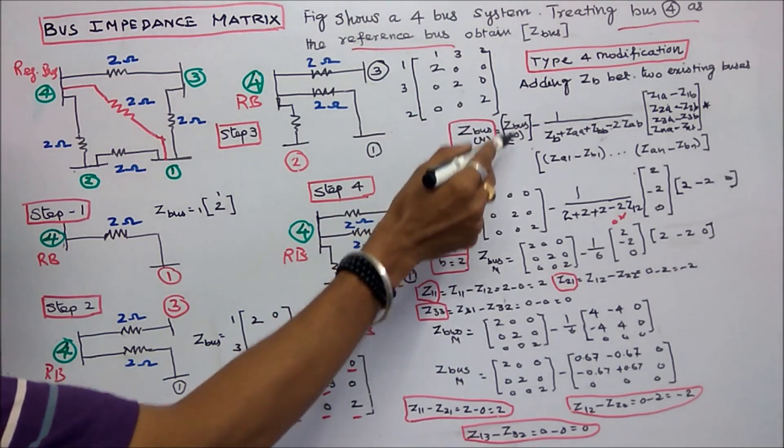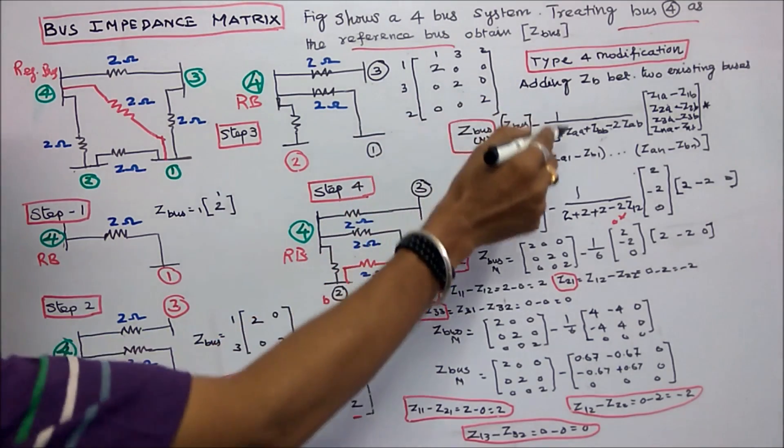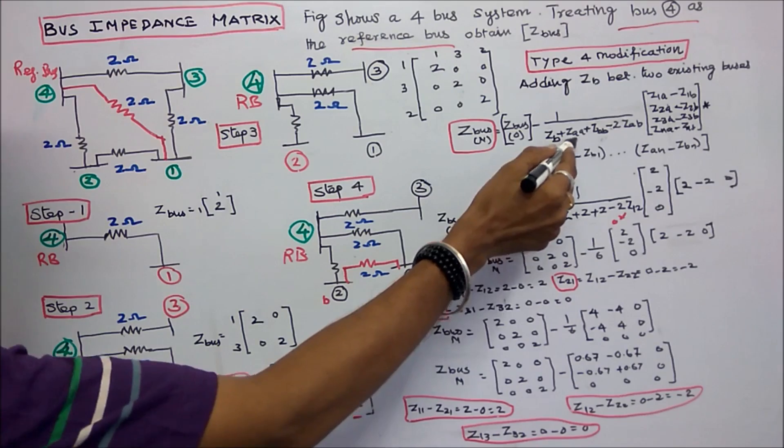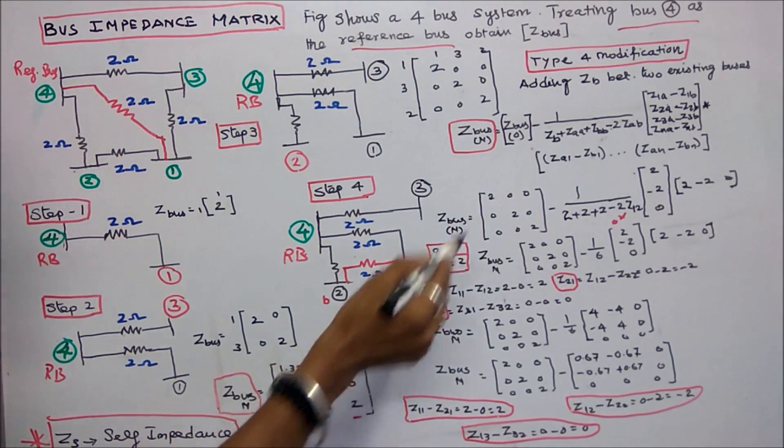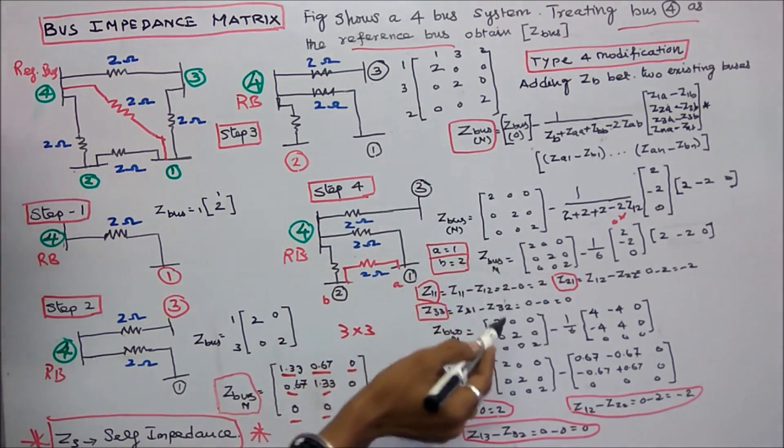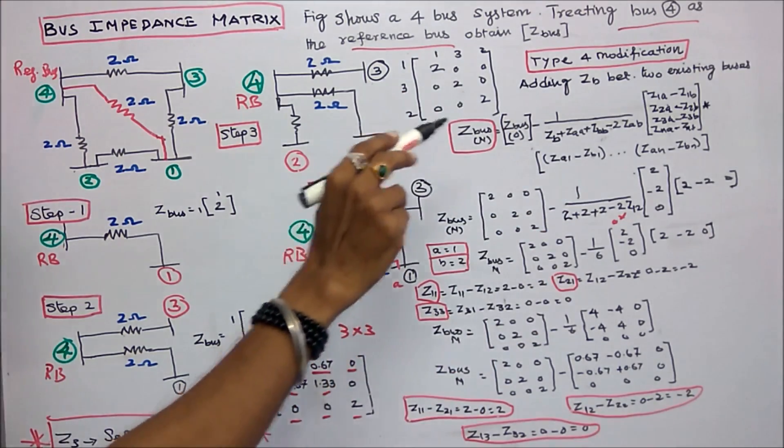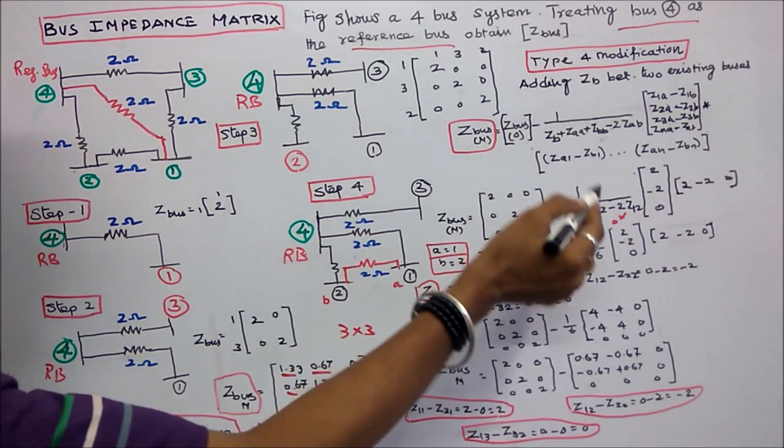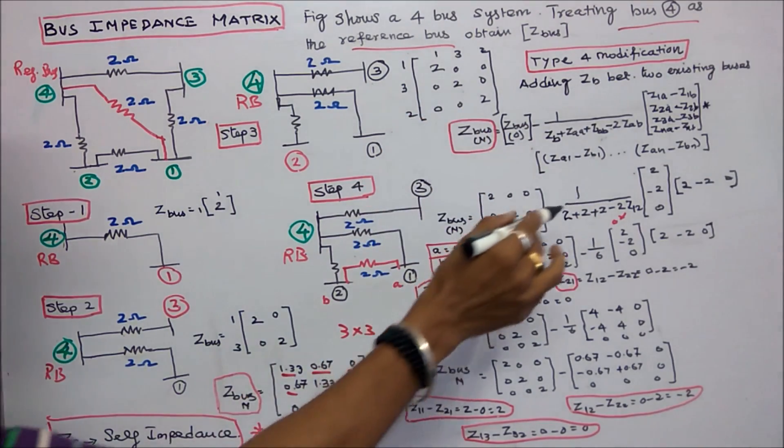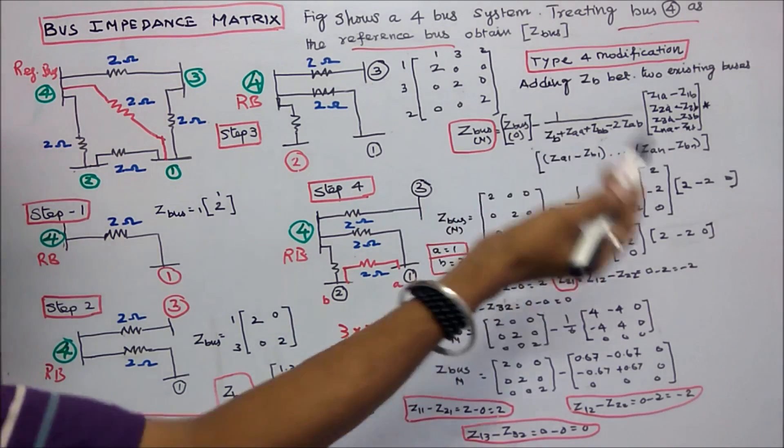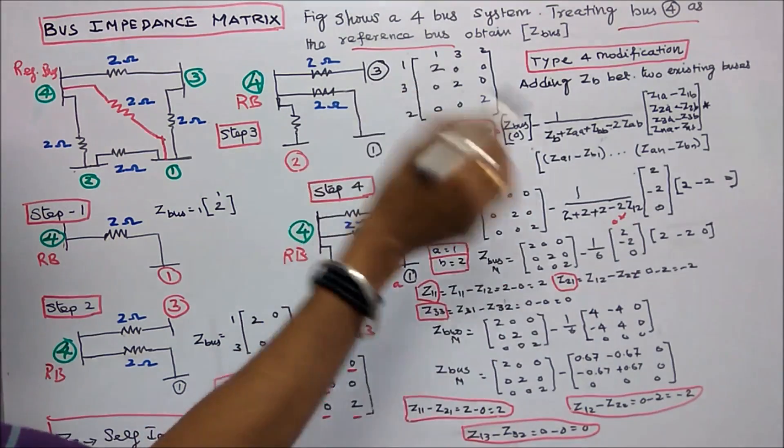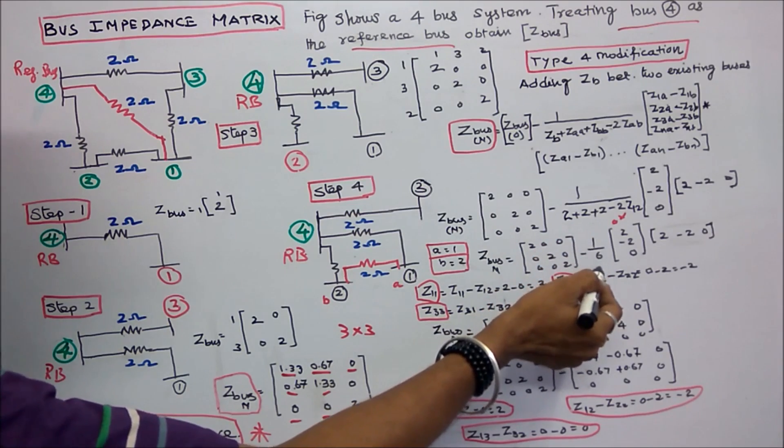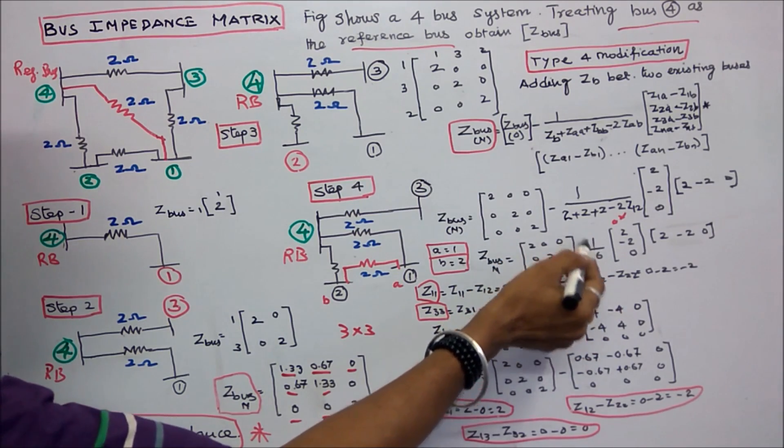Z bus new is equal to old Z bus minus 1 by ZB. Here A is equal to 1. Z11 is equal to 2. Plus ZBB, B is equal to 2, Z22 is equal to 2. Minus 2 into Z12. Z12 is equal to 0. Therefore this part minus 1 by 6. So this is the volt matrix, minus 1 by 6.